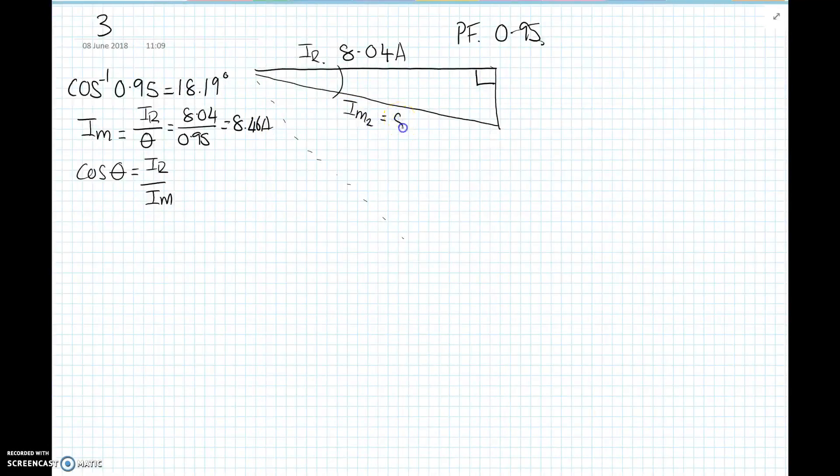So now using our trig functions we can work out the others. The new motor current IM is going to be, the cosine of the angle is the adjacent IM. So IM is going to be IR divided by the cosine factor, which is going to be 8.04 divided by the new power factor 0.95, which gives us now 8.46 amps. So that's much better. So now IM2, because it's been improved, is now 8.46, whereas before it was 12 amps. So we've saved a good three and a half amps there.